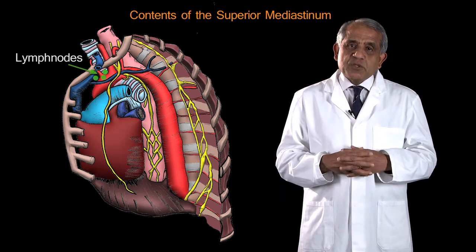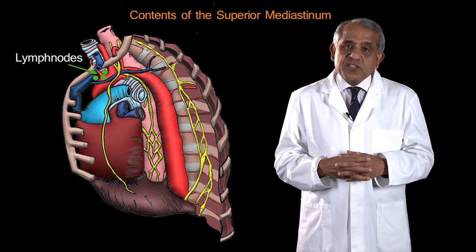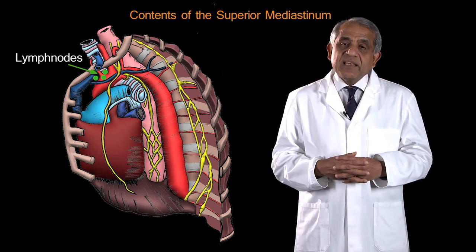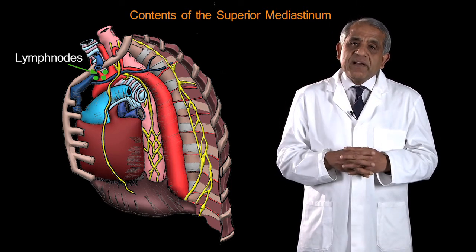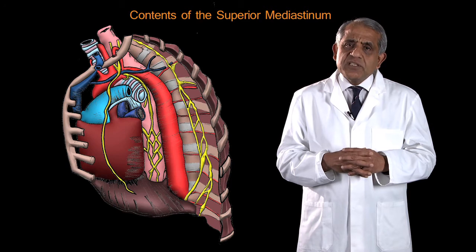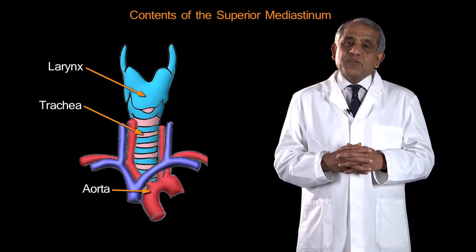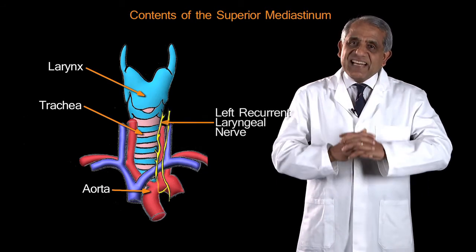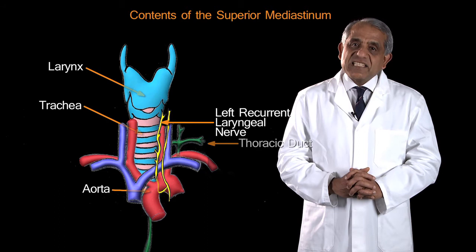There are lymph nodes in the superior mediastinum, of great importance to the oncologist and the thoracic surgeon. And in the left half of the superior mediastinum are two structures, quite important, for which there are no counterparts on the right side. These are the left recurrent laryngeal nerve and the thoracic duct.